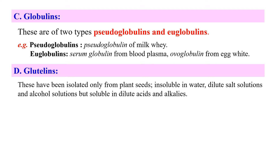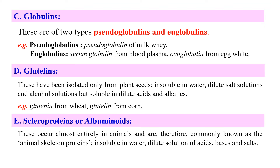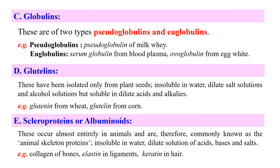Next, glutelins. These are isolated from plant seeds and are insoluble in water, dilute salt solution, and alcohol. Then scleroproteins or albuminoids — these are found almost entirely in animals and are therefore known as animal skeletal proteins. They are insoluble in water and dilute solutions of acids, bases, and salts. Examples of scleroproteins include collagen of bone, elastin in ligaments, and keratin in hair.